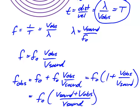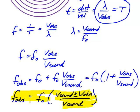If the observer is moving away from the source, then the derivation is the same except we subtract, giving F-obs equals F-naught times (v-sound minus v-obs) over v-sound. Combining both possibilities into one equation: F-obs equals F-naught times (v-sound plus or minus v-obs) divided by v-sound, where we pick the plus sign when the observer is approaching the source, and the minus sign when moving away.